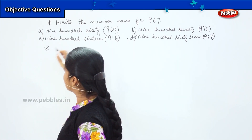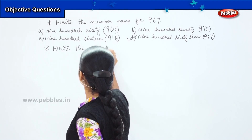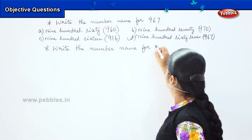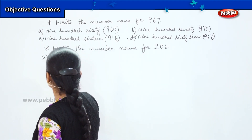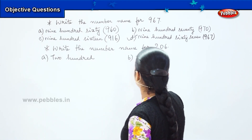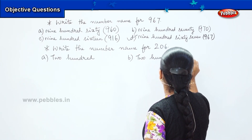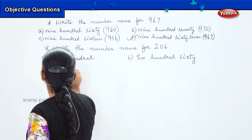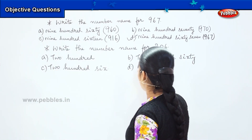Here is the next question: write the number name for 4206. The options are: option A is 200, option B is 260, option C is 206, and option D is all of these.